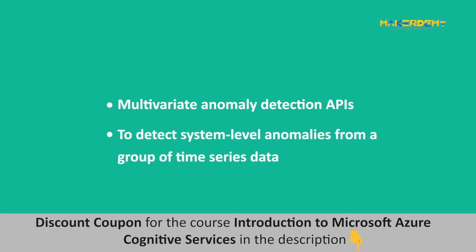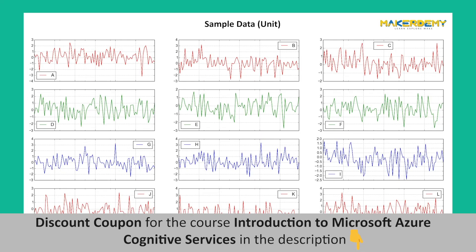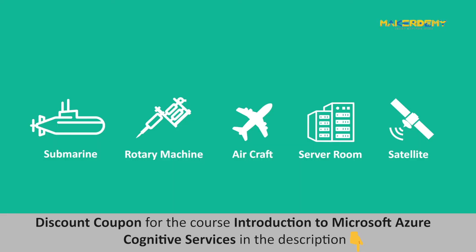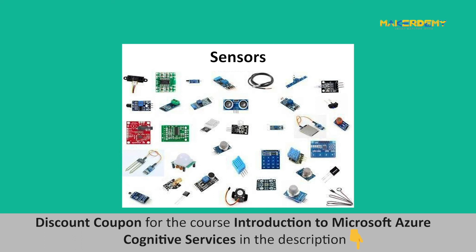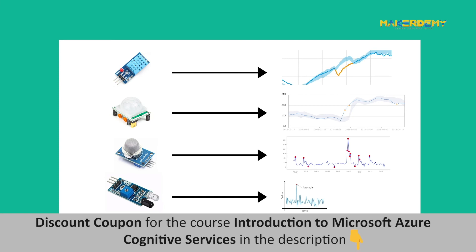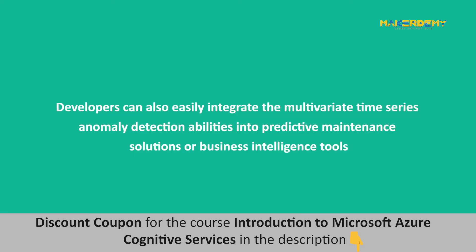Use cases of the Multivariate Anomaly Detector: We use multivariate anomaly detection APIs when our primary goal is to detect system level anomalies from a group of time series data, particularly when any individual time series won't reveal much information. We have to look at all signals from various sensors holistically to determine a system level issue. Such scenarios can be observed in large complex systems like a submarine, a rotary machine, an aircraft, a server room, or a satellite — each having tens or hundreds of different types of sensors. Developers can also easily integrate multivariate time series anomaly detection into predictive maintenance solutions or business intelligence tools.